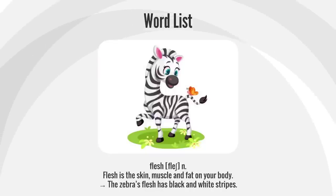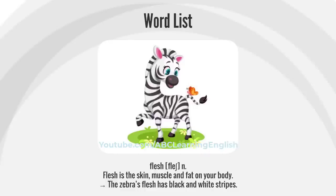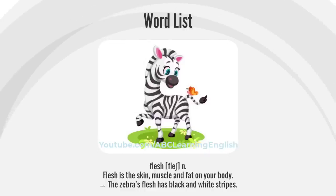Flesh. Flesh is the skin, muscle, and fat on your body. The zebra's flesh has black and white stripes.